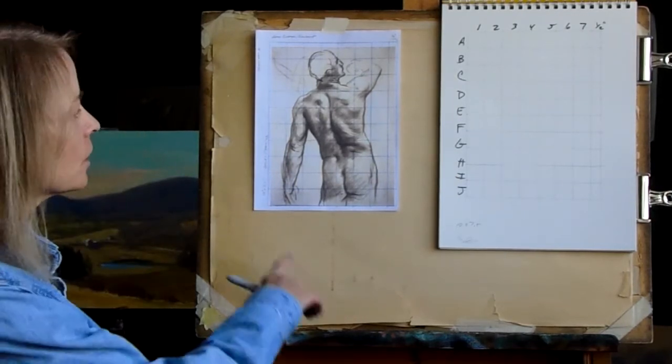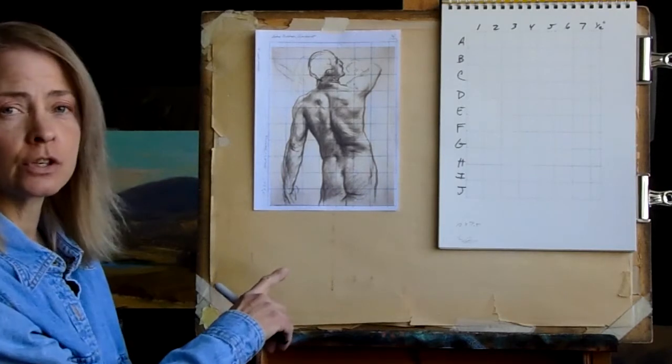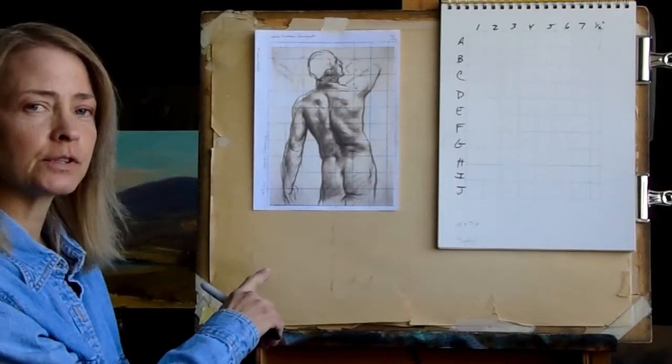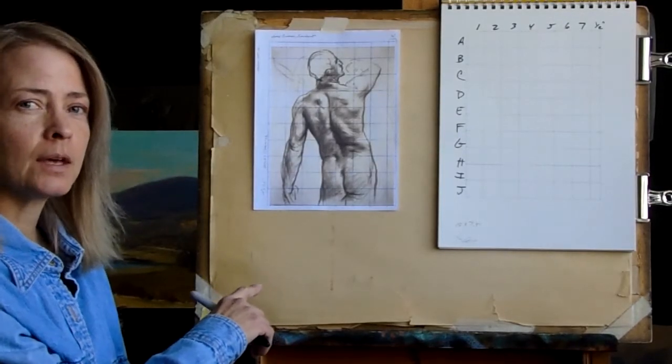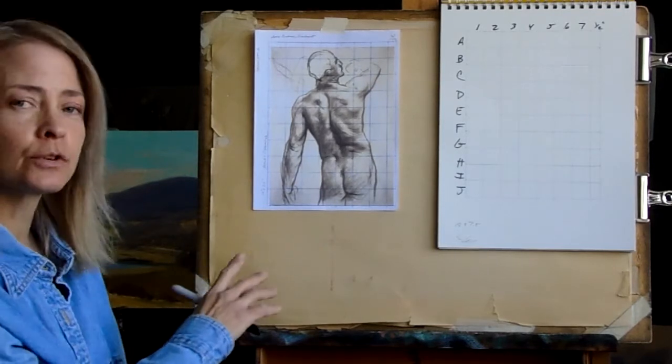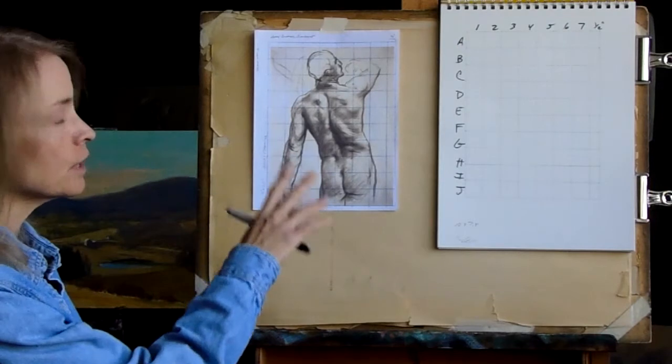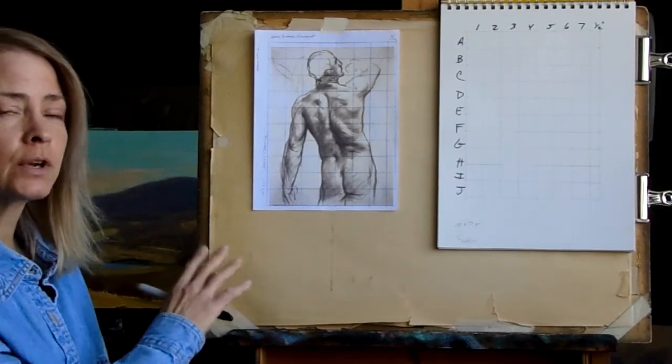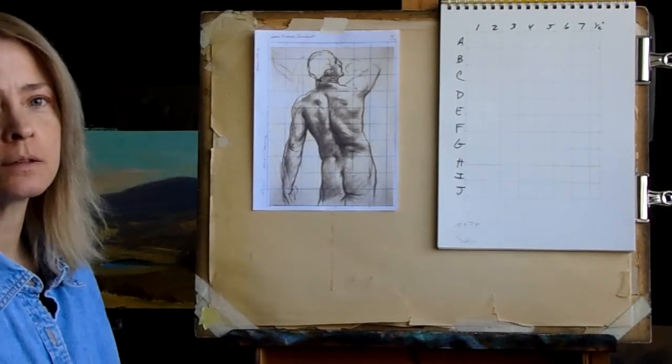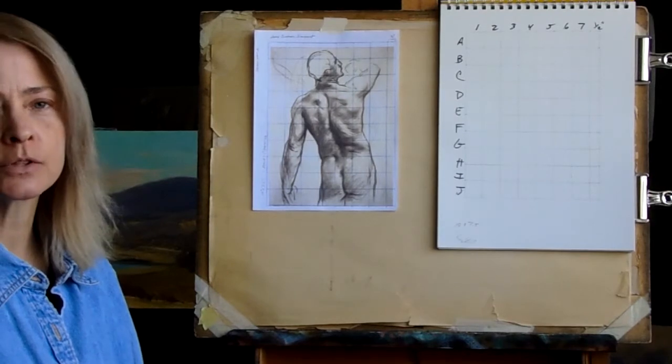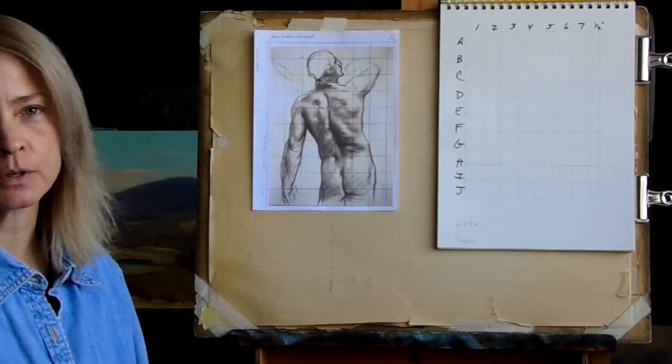Here you see Sargent trying to work out the gesture and the anatomy of this figure. And this is not the final version of this figure. This figure is very individual here. He will transform it so that that male figure appears as a Greek hero in the mural itself.